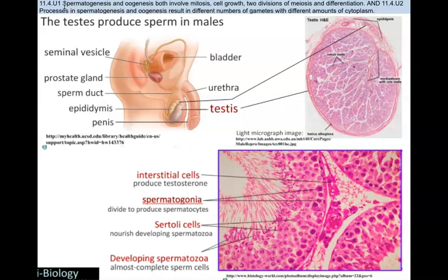The process of creation of sperm is called spermatogenesis; the process of creation of eggs is called oogenesis. Both do involve mitosis, cell growth, two divisions of meiosis, and differentiation. However, within those processes there are some major differences. The processes result in different numbers of gametes being created with different amounts of cytoplasm — these are some of the biggest differences between spermatogenesis and oogenesis. Remember, genesis means creation, and oocytes are eggs.